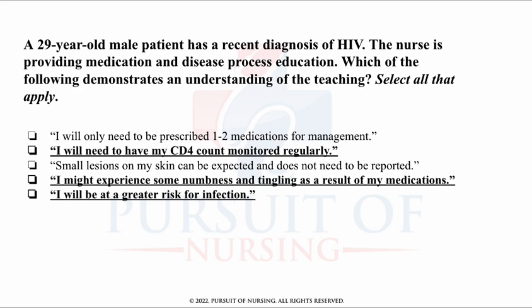The correct statements are: I will need to have my CD4 count monitored regularly. I might experience some numbness and tingling as a result of my medications. And I will be at a greater risk for infection. Anyone with HIV has their CD4 checked regularly. A diagnosis of AIDS is made once the CD4 count falls below 200. These patients are always immunocompromised and are at an increased risk for infection.